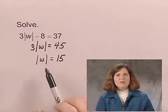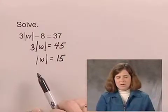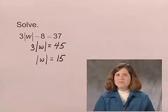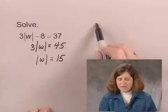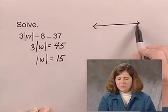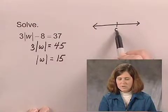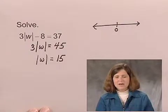Now that we've solved for the absolute value of W, we need to think, what numbers have an absolute value of 15? Well, on a number line, all the numbers that are 15 units away from 0 will have that absolute value.